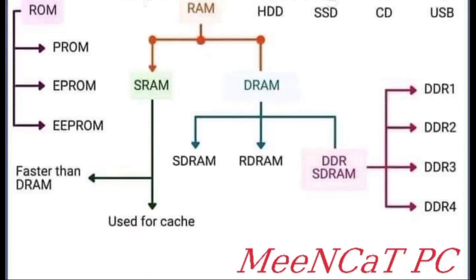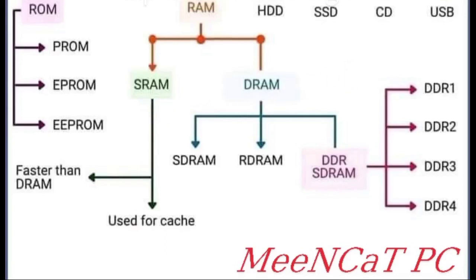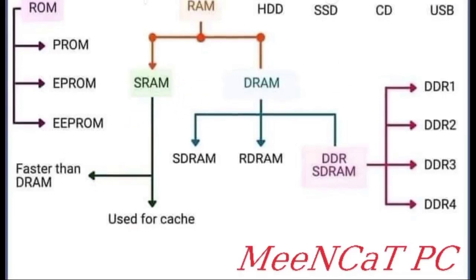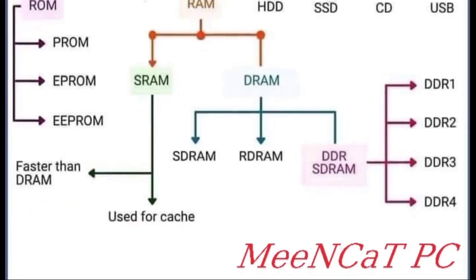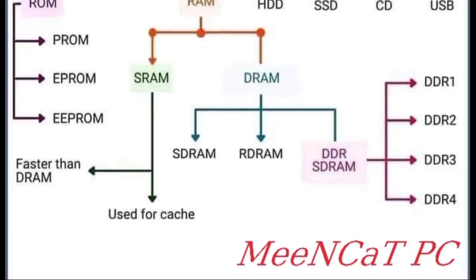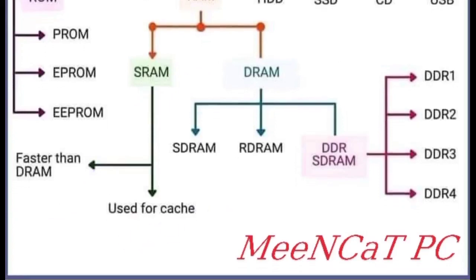Static random access memory is faster than dynamic random access memory — SRAM is faster than DRAM. Also, SRAM is used as cache memory. If you want to know more about cache memory, you can search for the video on my YouTube channel.